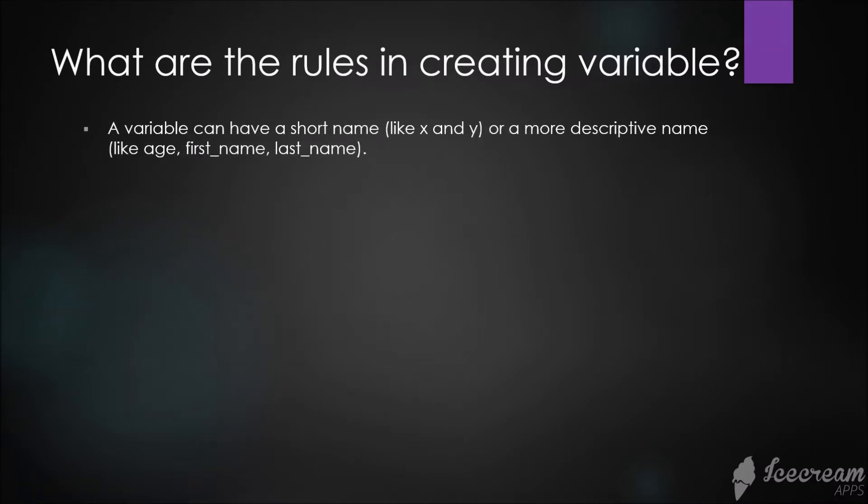What are the rules in creating variables? A variable can have a short name like x and y, or a more descriptive name like age, first_name, and last_name.